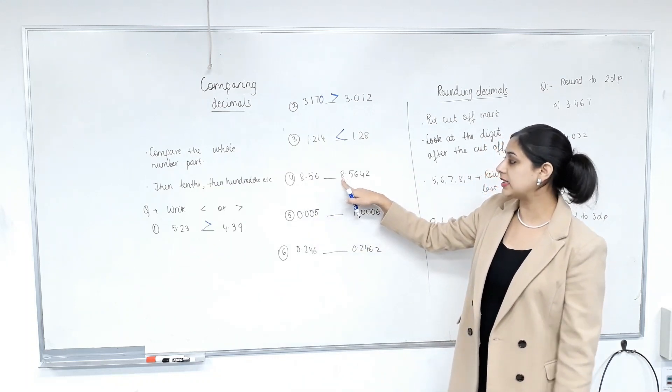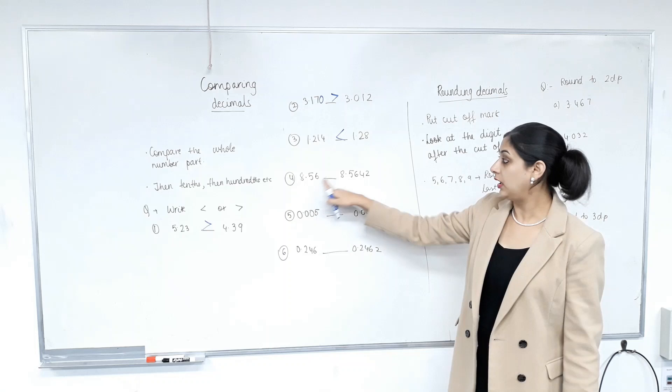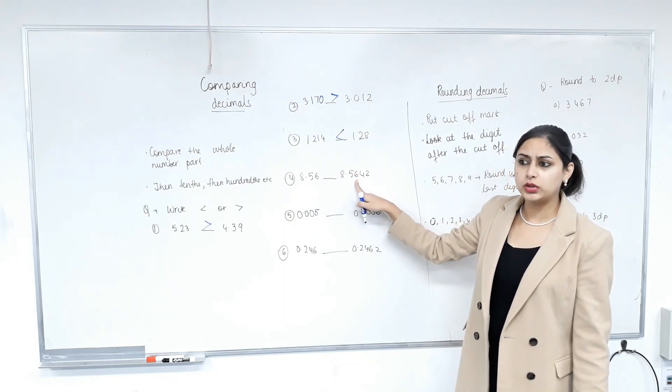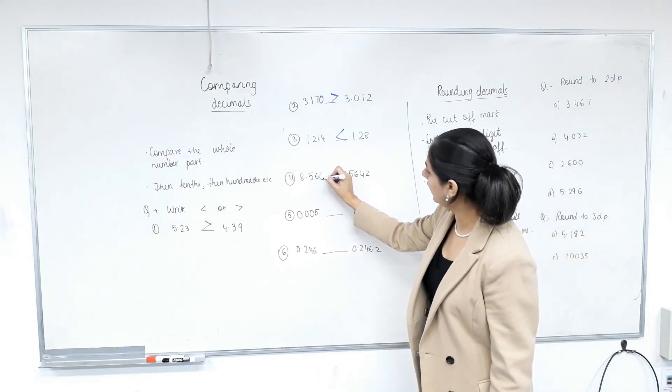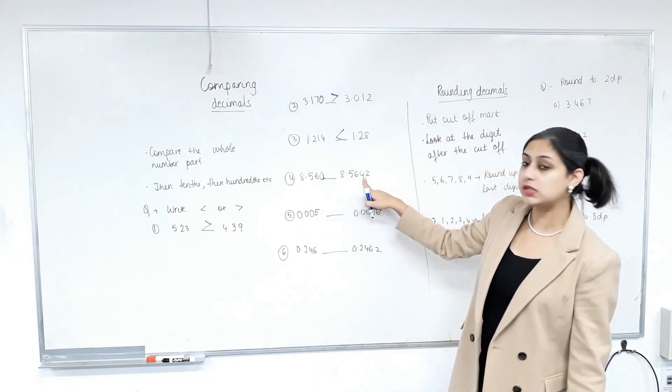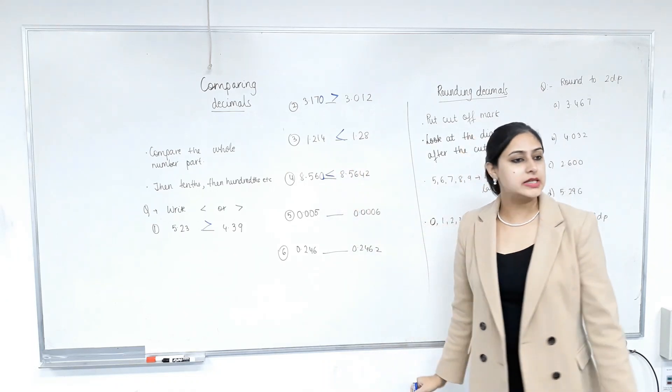Next one. Whole number part, same? Yes. Tenth part? Zero. Same. Hundredth part? Zero. Then what do we do? Julie? We add a zero to the whole number that's more. Yep. This is zero and this is four. Which is bigger? Four. Easy? Yeah.